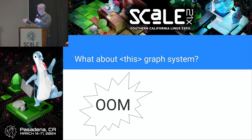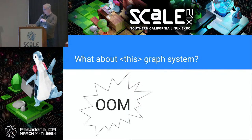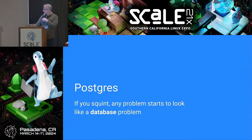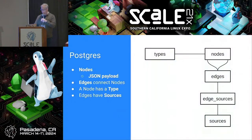After weeks, maybe a month, of trying various graph systems, my boss, the VP, comes by my desk and quietly asks, is this thing actually going to work? Do we keep funneling money into this? And I said yes — my gut tells me it's going to work, but my gut also tells me that these dedicated graph engines are not the path forward. And I started trying to play around in Postgres, because one, I like Postgres, and two, if you squint hard enough, every problem is a database problem, and this one fits.